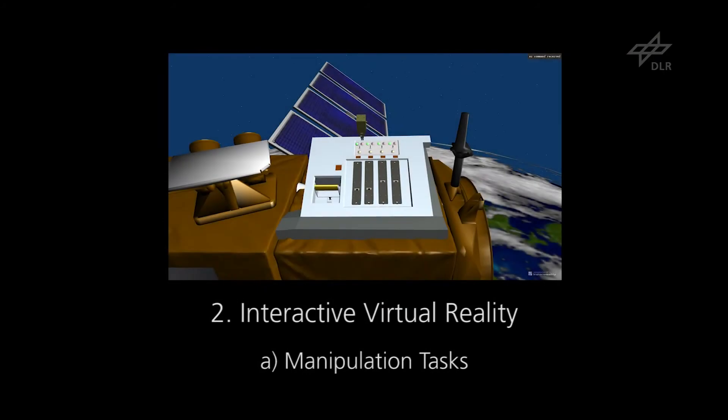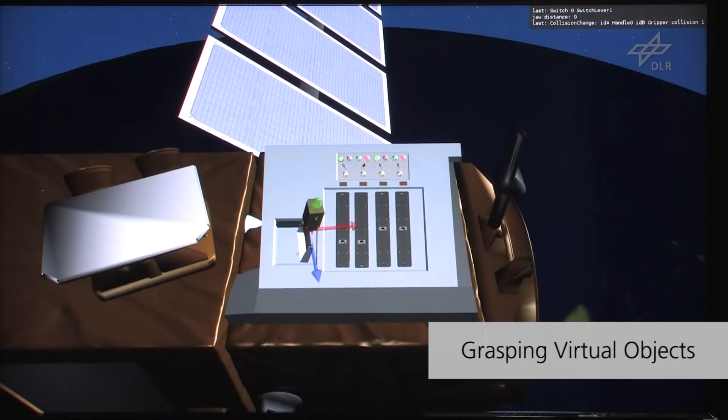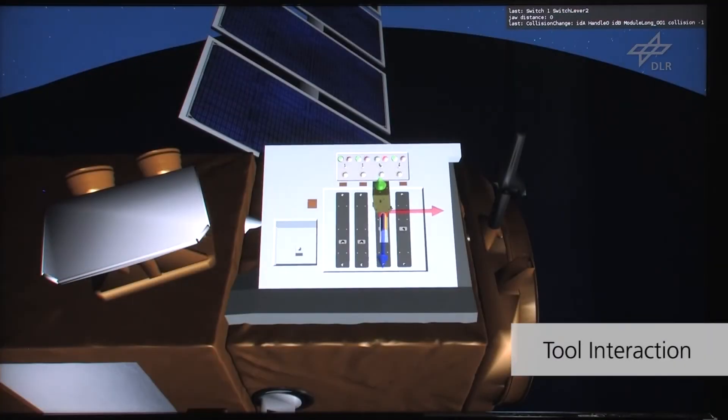One possible task in our simulation is replacing a broken module. For that, the user has to carry out several subtasks. These are: turn off the switch related to the broken module, grasp the handle with a gripper, and remove the module from its cavity. This action shows the interaction possibilities between tools.